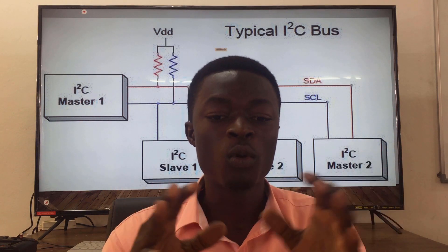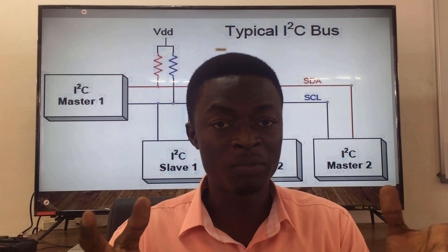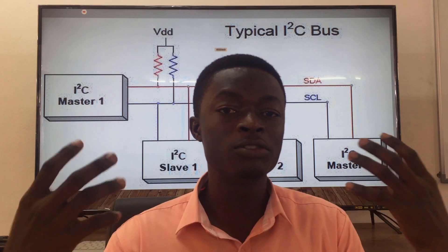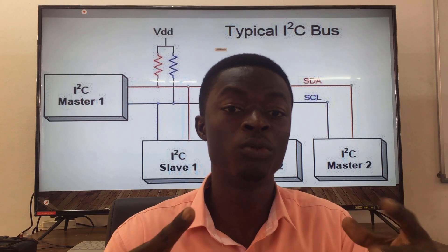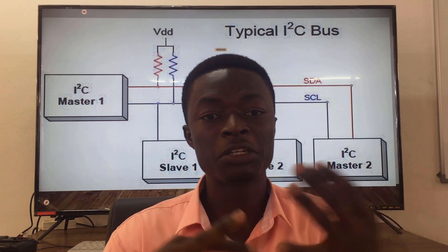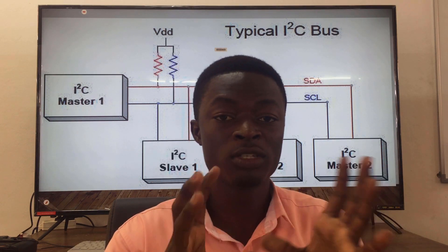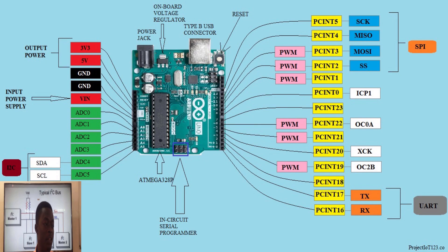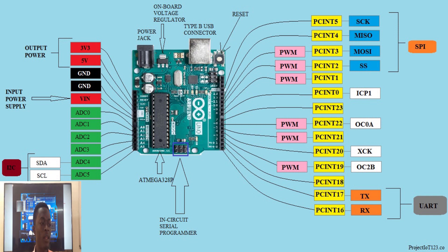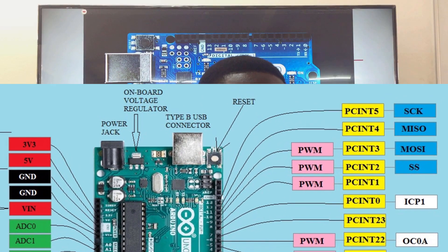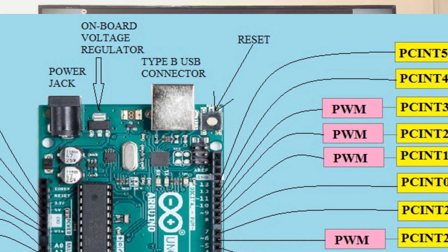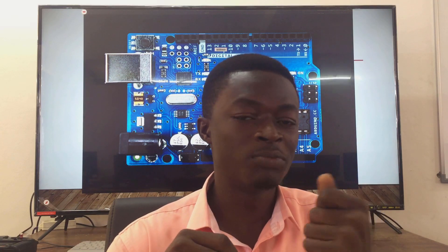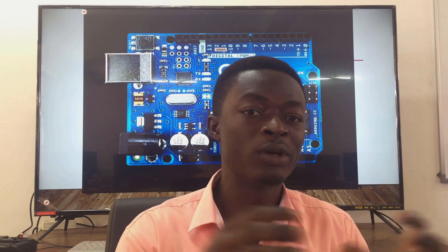I2C is slow, but it is one of the best modes of communication because it allows you to connect a lot of modules. For instance, if you're building a robot where you need to connect obstacle sensors and all sorts of sensors, this is the best to use. Now, looking at the physical Arduino board, it has a USB Type-B connector, which is the interface you use to connect to your PC.